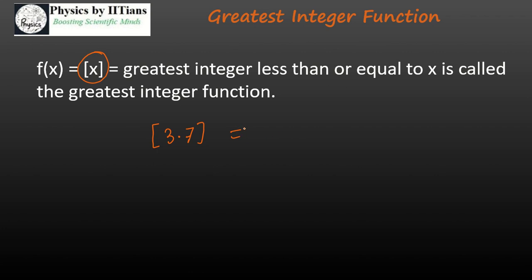So the greatest integer of 3.7 is equal to 3. Similarly, if I write what is the greatest integer function for 0.79, you can see that the greatest integer that is less than this particular number 0.79 is 0 itself. So 0 will be the greatest integer for this.